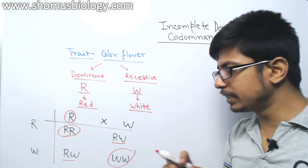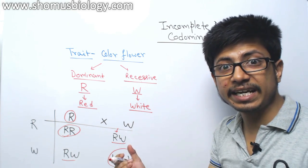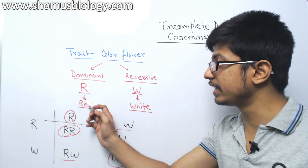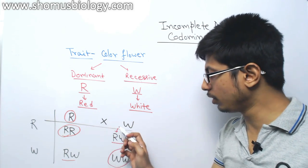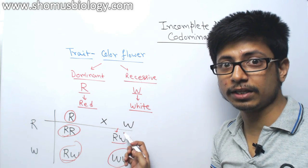And we have two of them RW and RW. Now according to the Mendel inheritance, as dominant allele R is present, it should express its characteristic which is red color. So these two offspring should get red coloration in their flower.